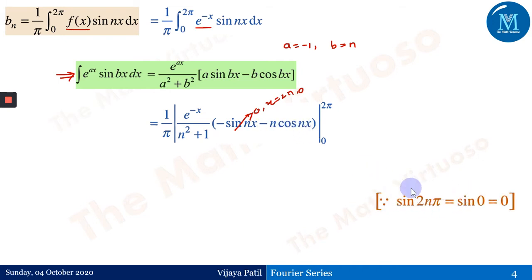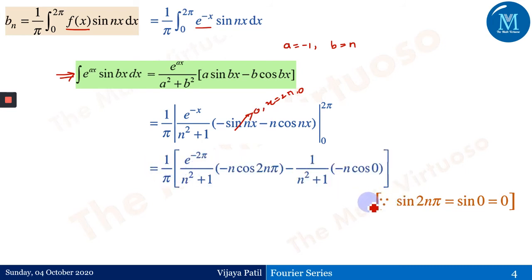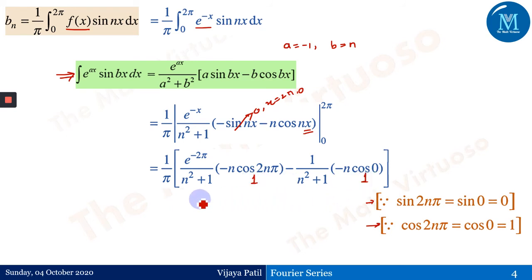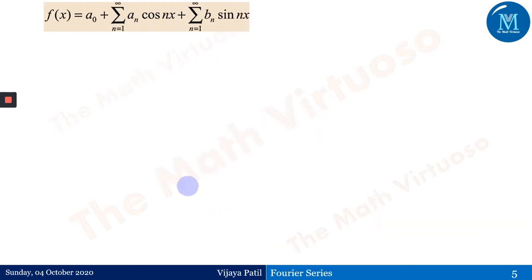The sine terms again vanish at x = 2π and x = 0, so we only deal with the cosine term: e^(−x)/(n²+1) · (−n cos(nx)), evaluated at the limits. Replacing x by 2π first, then x = 0: cos(2nπ) = 1 and cos(0) = 1. After simplification, bₙ = n/(π(n²+1)) · (1 − e^(−2π)).